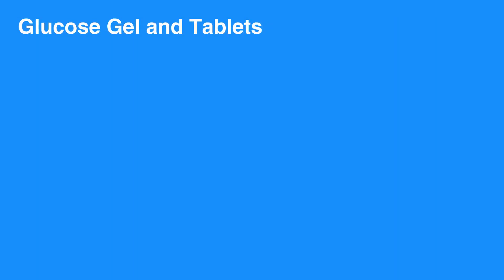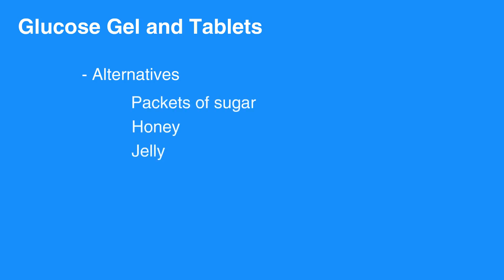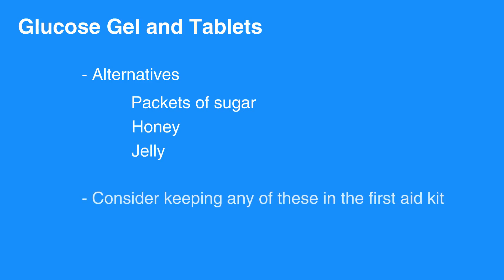Glucose gel and tablets are available and a good way to quickly increase blood sugar. Alternatives to gels and tablets include packets of sugar, honey, or jelly from restaurants, which may be readily available. Consider keeping any of these in the first aid kit.